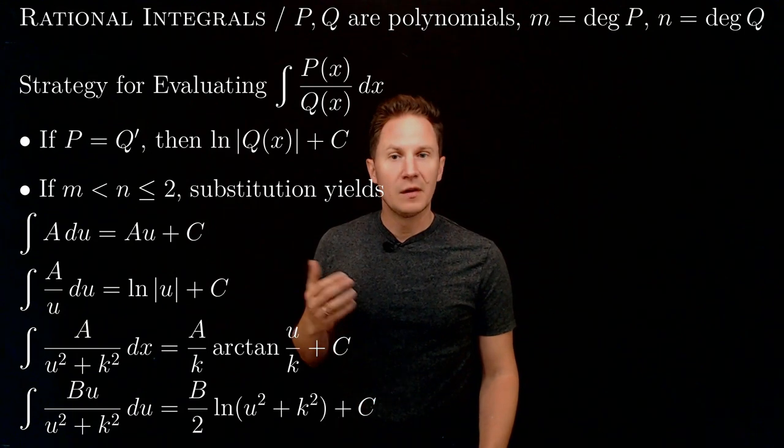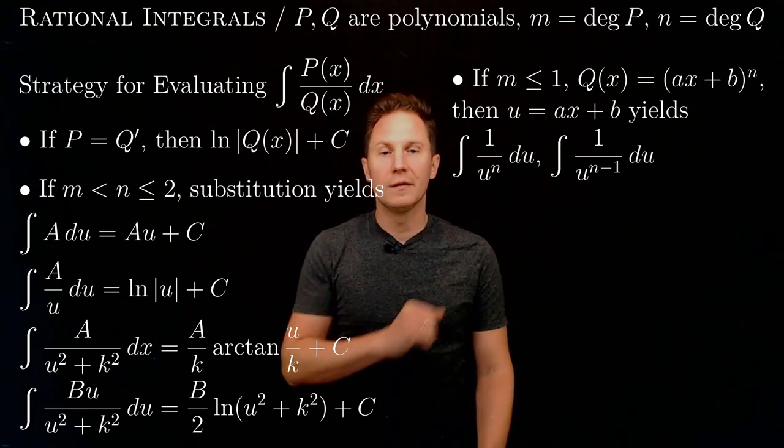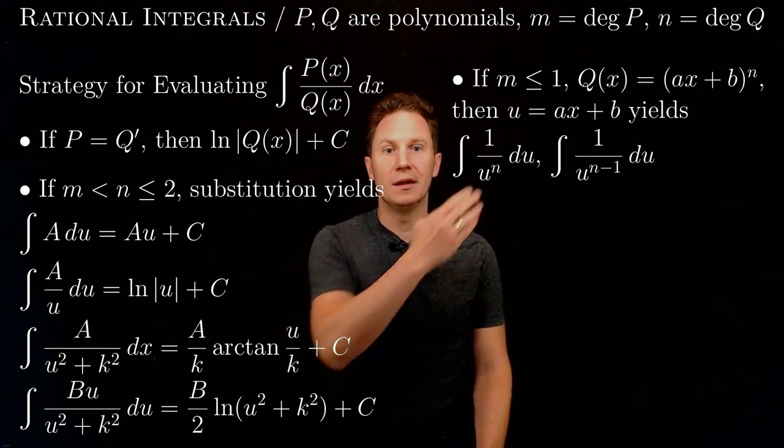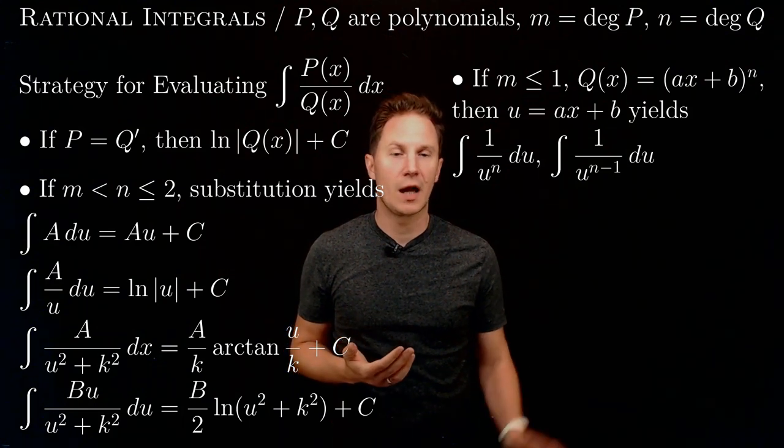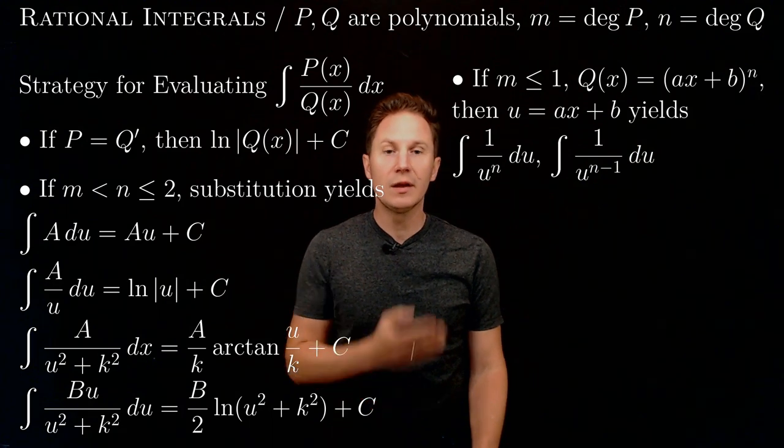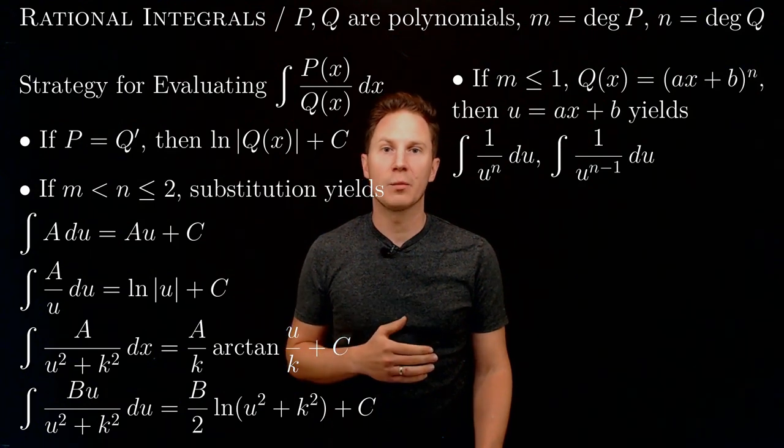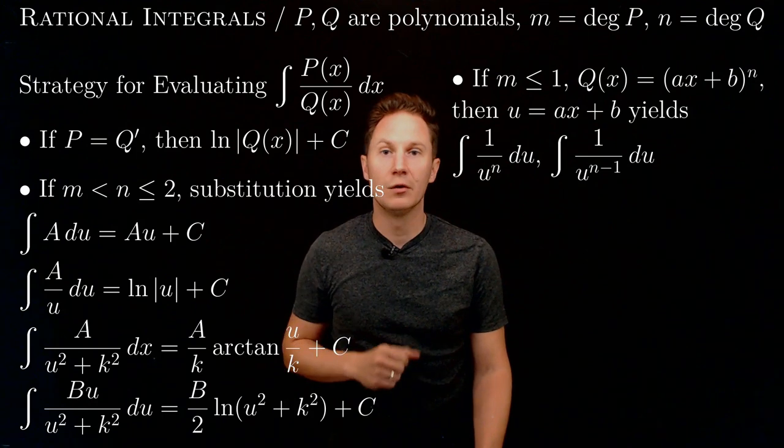If the degrees are larger than that, for example, the numerator still has a degree less than or equal to 1 but the denominator can be of degree n of a special type where it's (ax + b) raised to the n power, then we can still use substitution u equals ax plus b and end up with one of these two integrals depending on the degree of the numerator.